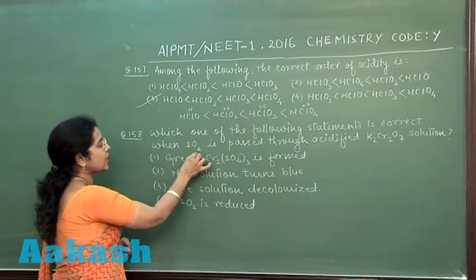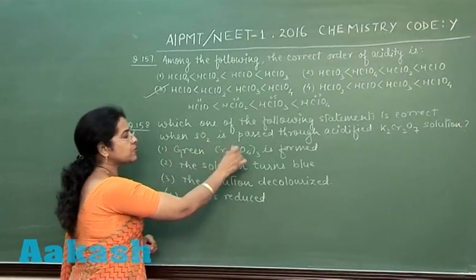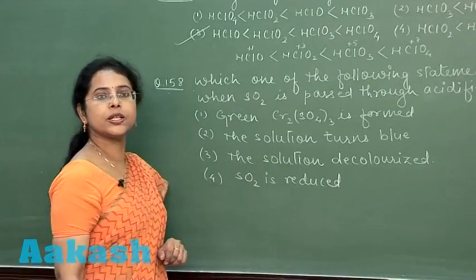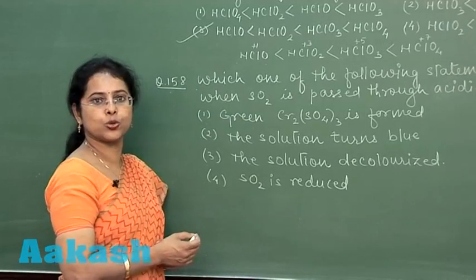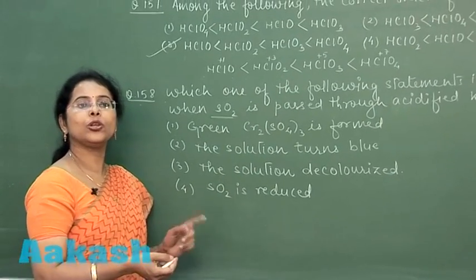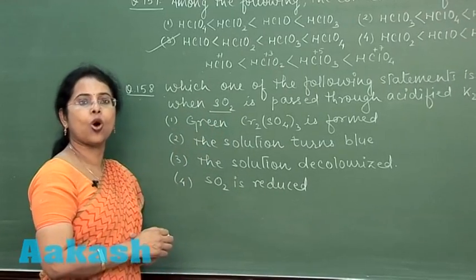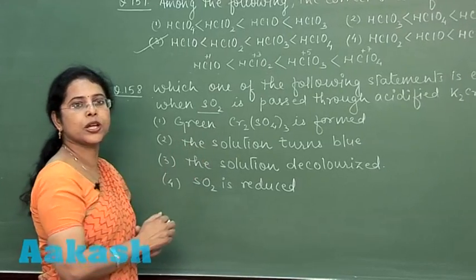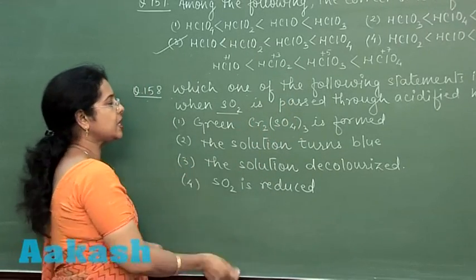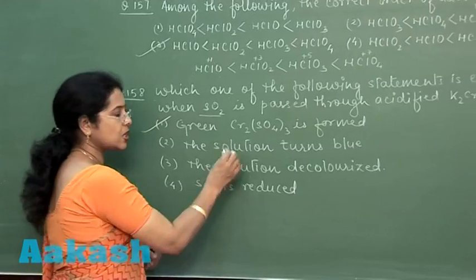Moving to the next question, question number 158: which one of the following statement is correct when SO2 is passed through acidified potassium dichromate solution? First option is green chromium sulfate is formed, second option is the solution turns blue, third option is the solution decolorized, and fourth option is SO2 is reduced. Now, in this question, sulfur dioxide passed through acidified potassium dichromate—we know that potassium dichromate is a strong oxidizing agent. It will oxidize sulfur dioxide to sulfur trioxide, and then sulfur trioxide will react with potassium dichromate forming chromium sulfate. A compound of chromium is green in color, so green colored chromium sulfate is formed. The correct answer is first option.